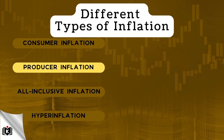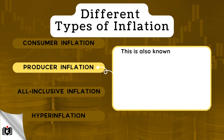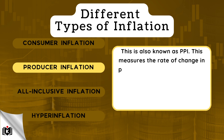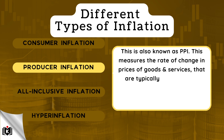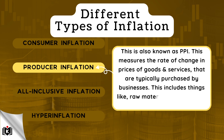Producer inflation is another type of inflation, also known as PPI. This measures the rate of change in prices of goods and services that are typically purchased by businesses. This includes things like raw materials, intermediate goods, and energy.